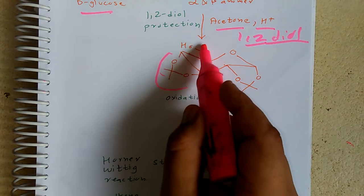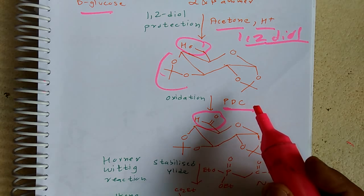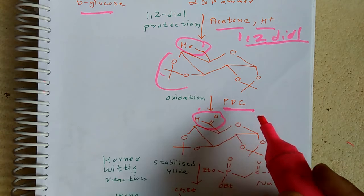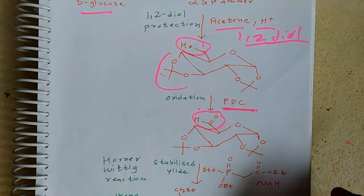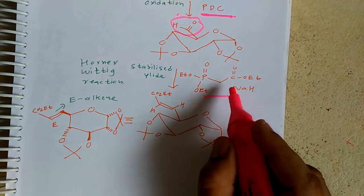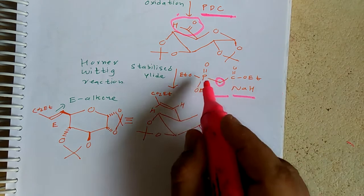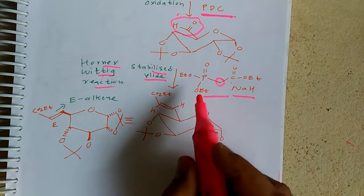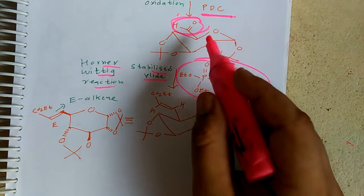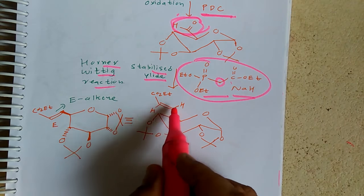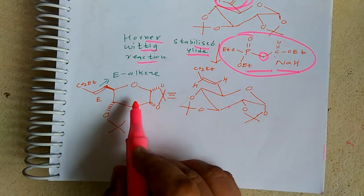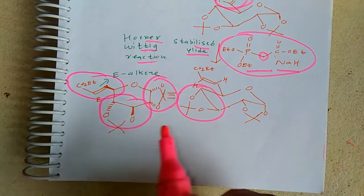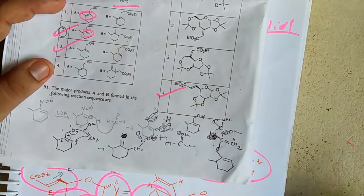PDC oxidizes the primary alcohol to an aldehyde — PDC is a mild reagent (no DMF solvent mentioned, so not the more reactive form). Then the phosphonate base extracts a proton to make a stabilized ylide, and the Horner-Wittig (HWE) reaction gives an E-alkene with a formyl group at the end. The final product is the E-alkene as shown, which corresponds to the fourth option as the correct answer.